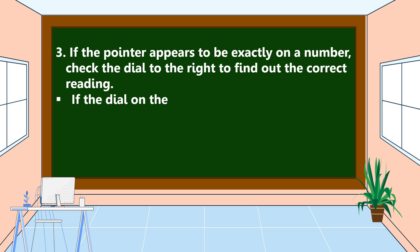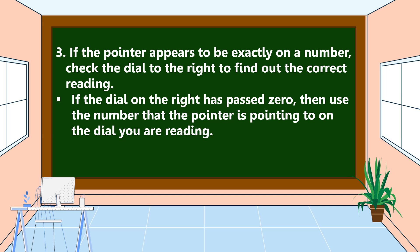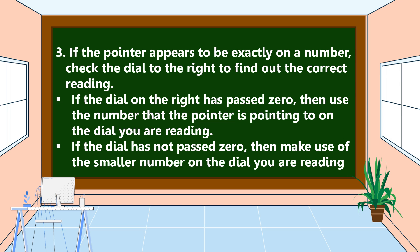If the dial on the right has passed zero, then use the number that the pointer is pointing to on the dial you are reading. If the dial has not yet passed zero, then use the smaller number on the dial you are reading.